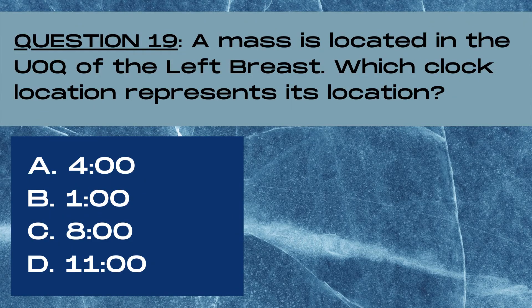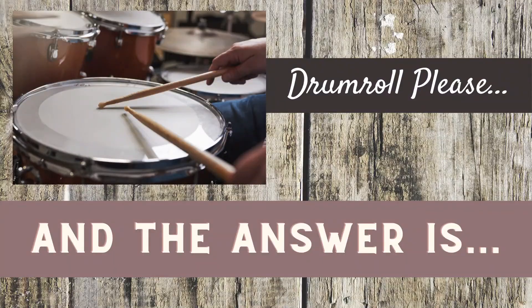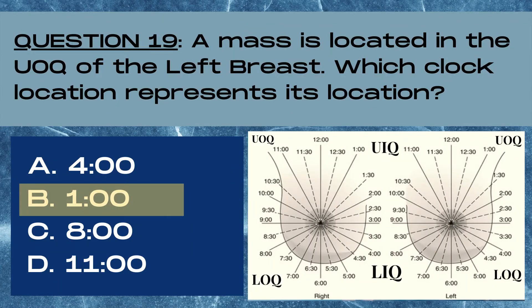Question 19. A mass is located in the upper outer quadrant of the left breast. Which clock location represents its location? A 4 o'clock, B 1 o'clock, C 8 o'clock, or D 11 o'clock? The answer is B, 1 o'clock. The upper outer quadrant of the left breast contains clock positions from 12 o'clock to 3 o'clock, and 1 o'clock is within this zone.